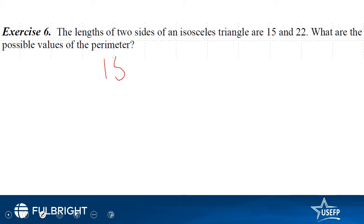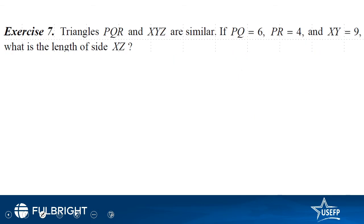So if we suppose it is 15, the perimeter comes out to be 52. But if we suppose it is 22, the perimeter comes out to be 59. This question has two right answers: 52 and 59.